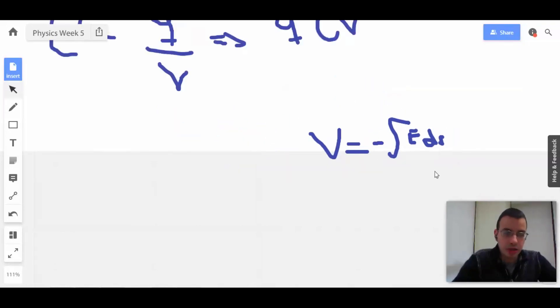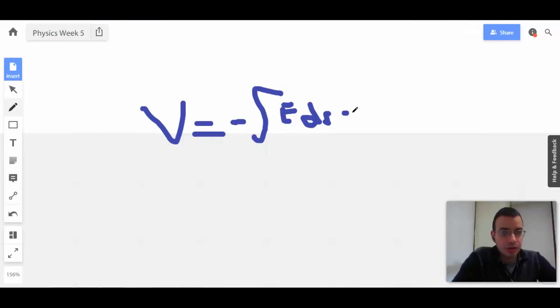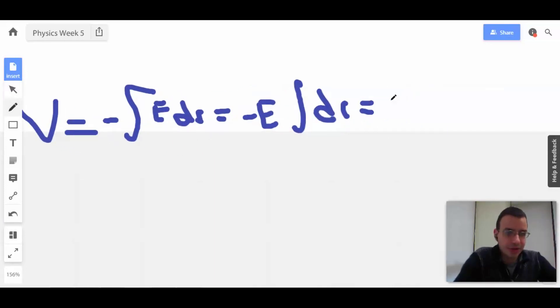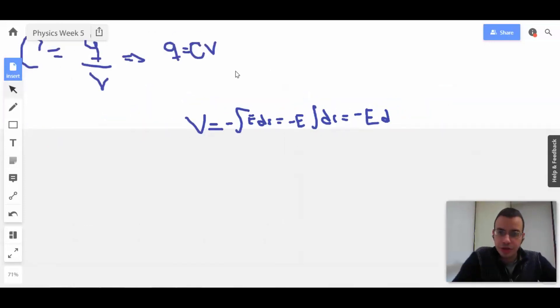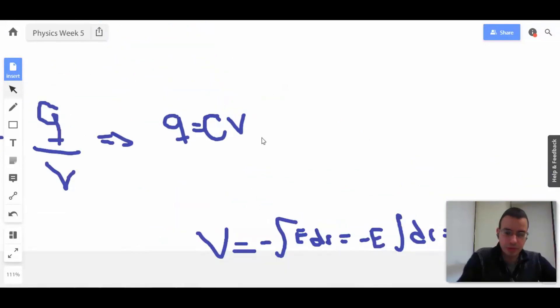So we know that voltage equals negative integral E dot dr. And in this case, we have a parallel plate capacitor, so we're assuming that the electric field is constant. So we can pull it out, and then we got left with integral dr, which in this case is going to be r, which I'm going to rephrase as d because that's kind of what they gave us. And then I'm just going to completely ignore that negative sign.